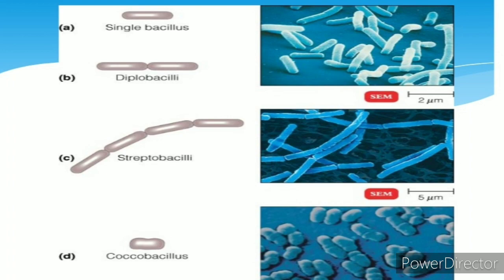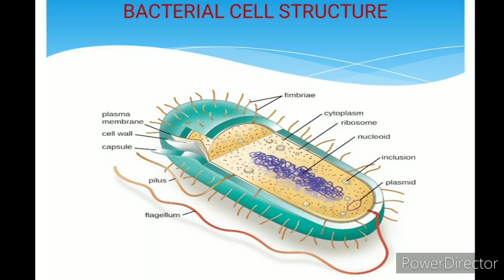Structure of bacterial cell: recollect the prokaryotic cell structure studied in your first year. It contains pilus, plasma lamella, cell wall, capsule, cytoplasm, flagella, mesosome, nucleoid, ribosomes, and plasmid. We will now study two variant components of the bacterial cell: flagella and plasmids.